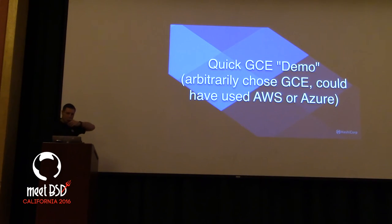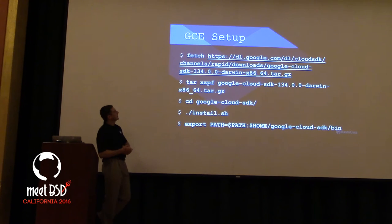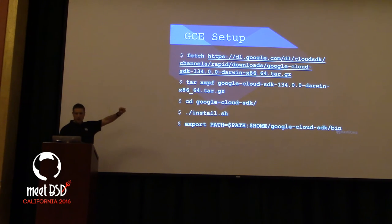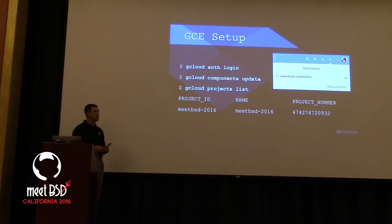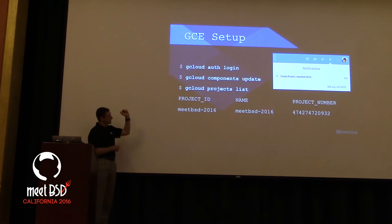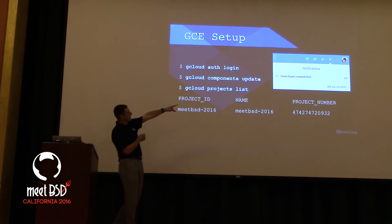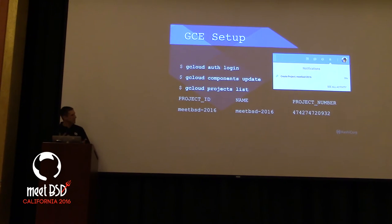What does it look like to work inside a cloud environment? You download the SDK — all official instructions from Google — extract, install, set your path. Then you log in, ask for an update because Google's continually innovating and changing their APIs. I created the meet-bsd project and it did so in 30 seconds. If you've never worked inside GCP, there's a little bit of friction, but the fact that it took 30 seconds to do something is kind of impressive.